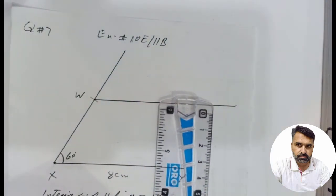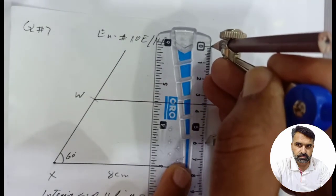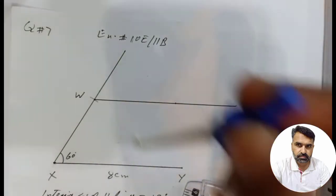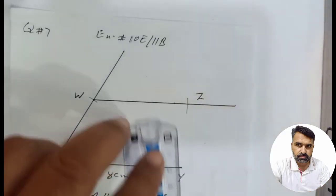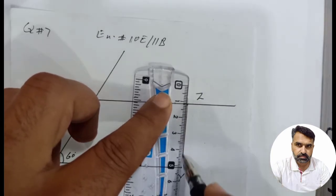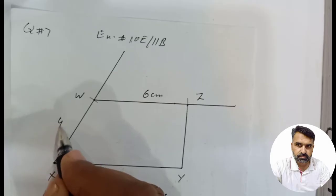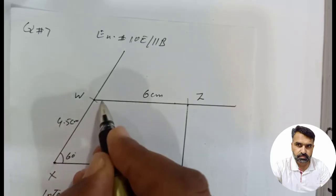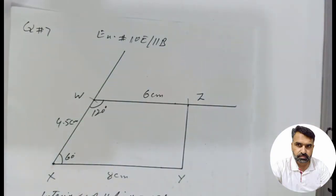Students, for WZ I will open the compass to 6 cm. I will draw a line which will intersect at the appropriate point and join the line. Students, YZ — I will join the line. So WZ is 6 cm, WX is 4.5 cm, and the angle at W is 120 degrees.